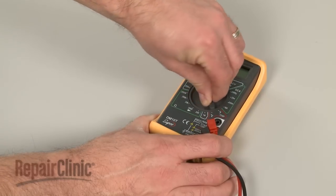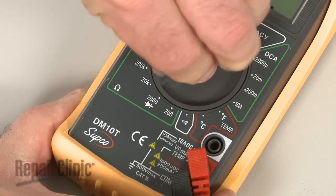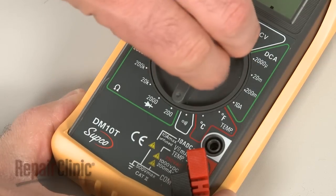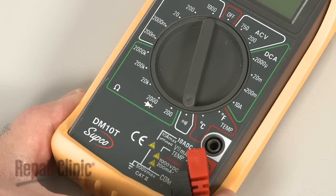When using a digital model, again rotate the dial to the lowest setting for ohms of resistance, or resistance with tone if your meter has this option.